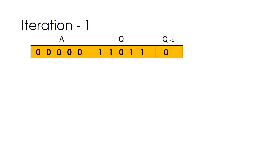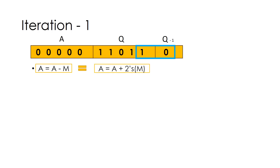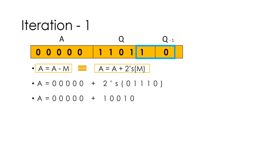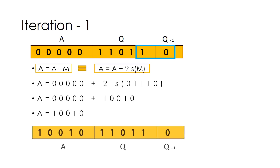Let's begin with the first iteration. The row contains A, Q, and Q minus 1. We need to check the last bits of Q and Q minus 1, which are 1 and 0. Thus, we need to perform A = A minus M, which is the same as A = A plus the two's complement of M. The two's complement of 0 1 1 1 0 is 1 0 0 1 0. Therefore, A will be 1 0 0 1 0. The row below shows the new value of A, with no change in Q and Q minus 1.